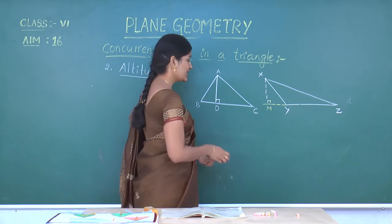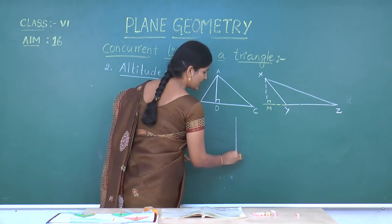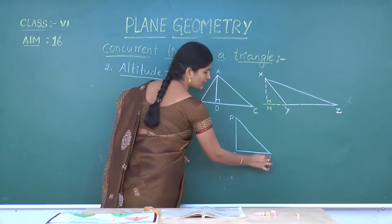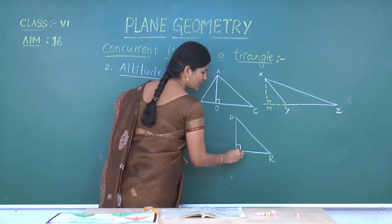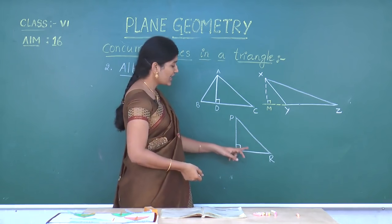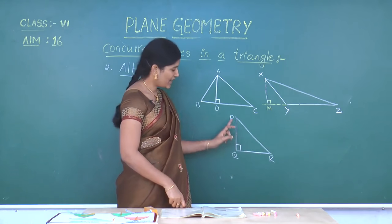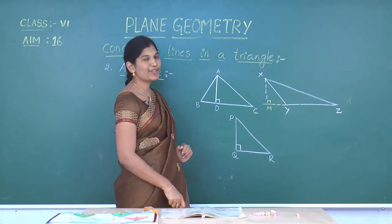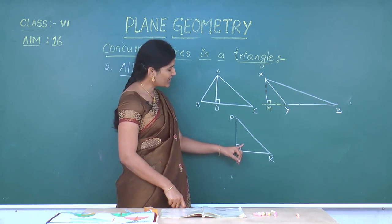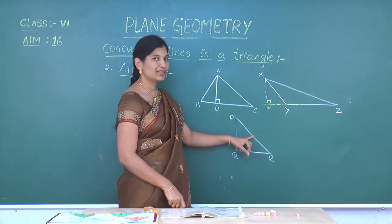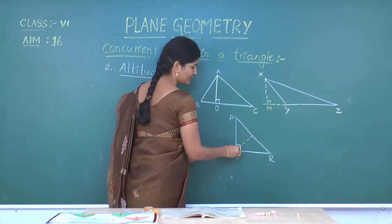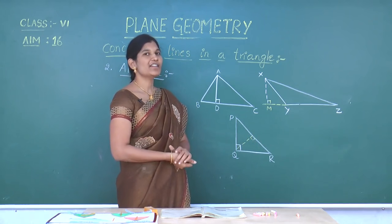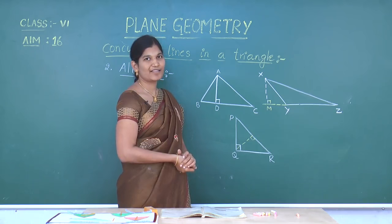What about the right angle triangle? Let me draw a right angle triangle PQR. Here it is the right angle. The legs will serve as altitudes. PQ and QR are 2 altitudes of this right angle triangle. One more altitude we can also draw. So for any triangle, we can draw 3 altitudes.